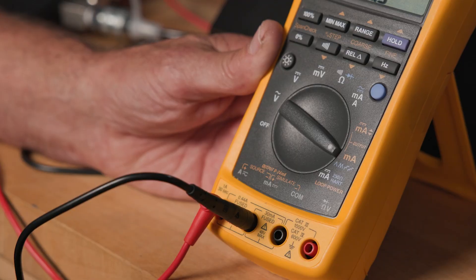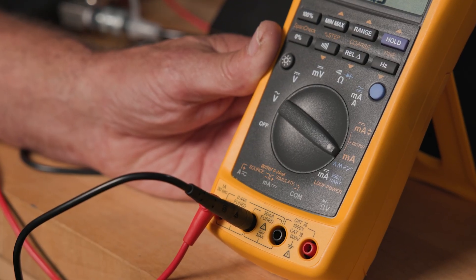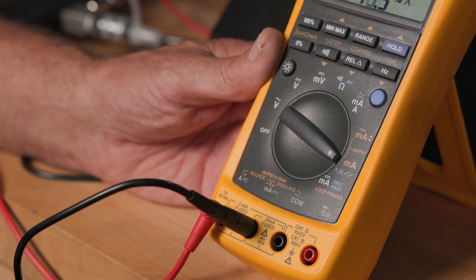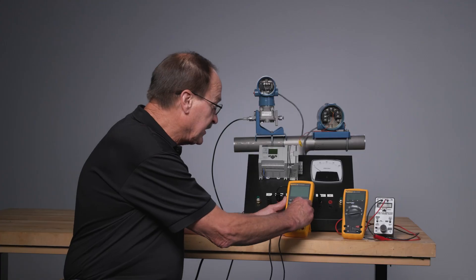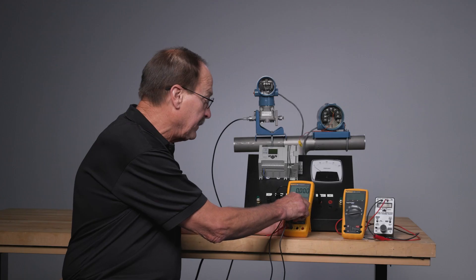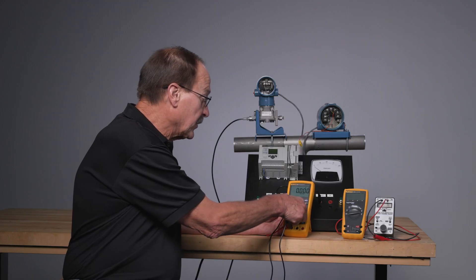The functions of this Process Meter, the traditional multimeter functions, are on the product in the white nomenclature here, but what sets it apart from a traditional multimeter is the milliamp signal source.